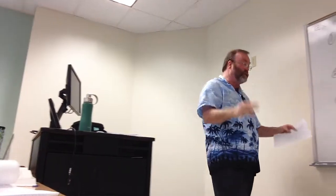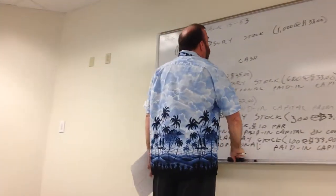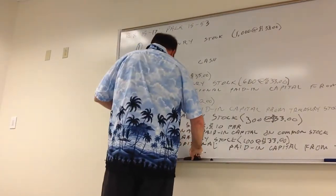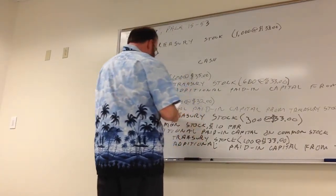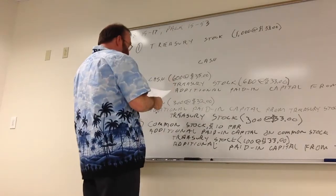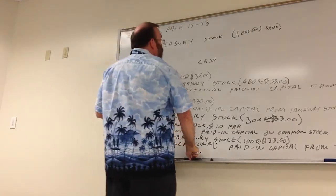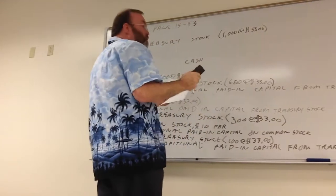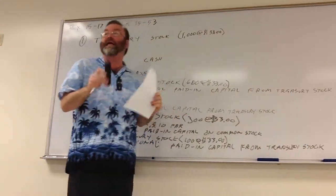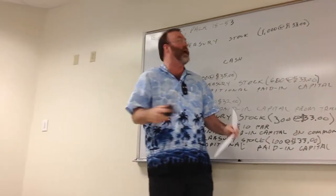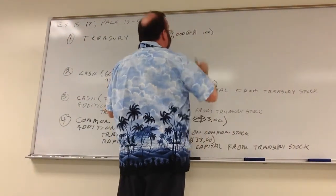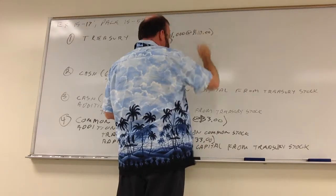What changes if we use the par value method? The first transaction changes substantially — we record treasury stock at the $10 par value, not the cost of $33.